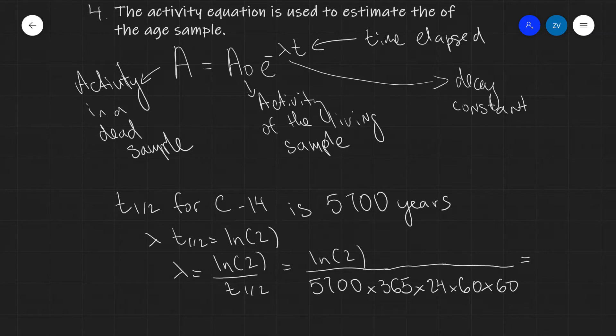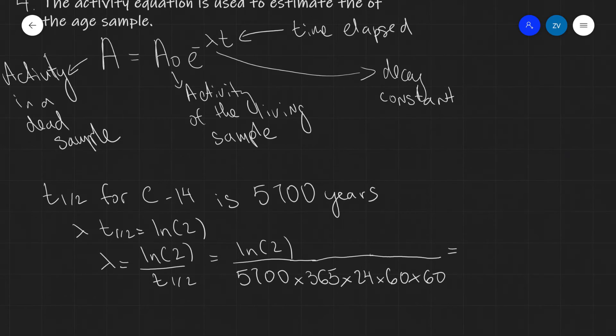If we put that into a scientific calculator, we get about 3.8 times 10 to the power of minus 12 seconds to the power of minus 1, which is our decay constant.